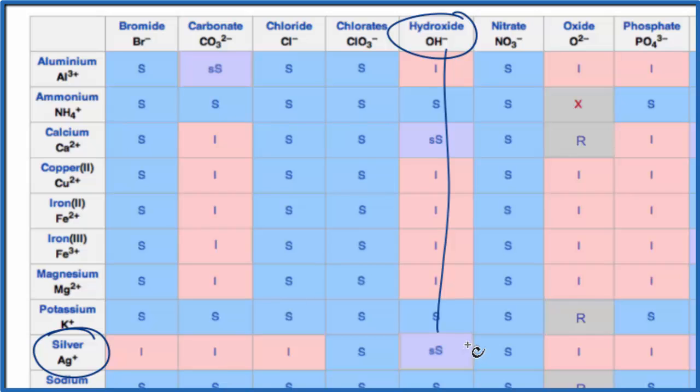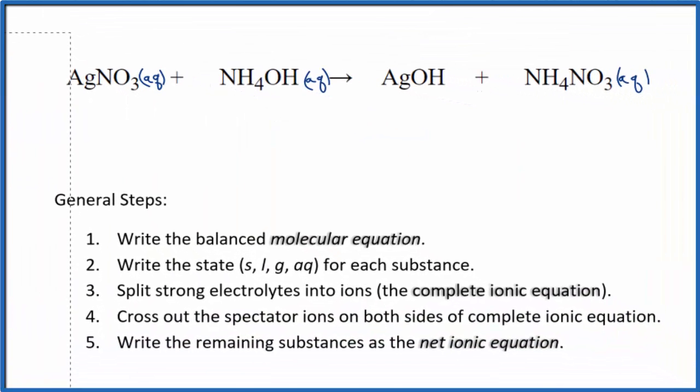Most of it will be a solid. So for the purposes of net ionic equations we're going to consider this to be insoluble. It's going to be a solid. These two will react. This solid AgOH will be a precipitate. It'll fall to the bottom of our test tube, so we have precipitation going on here.